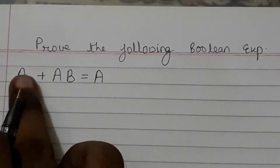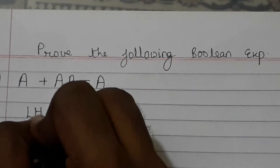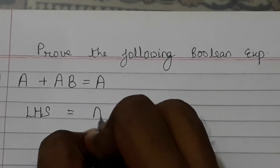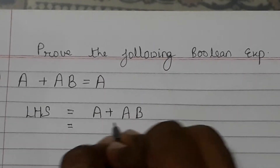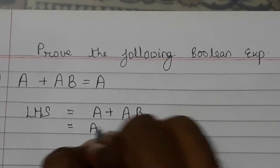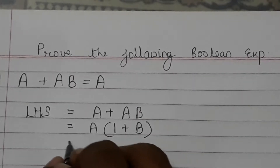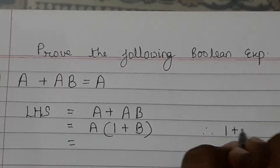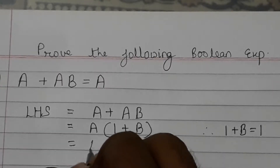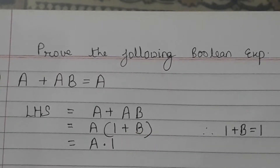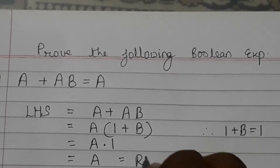We write the left hand side. LHS equals A plus AB. Taking A common: A into (1 plus B). Now 1 plus B equals 1, so we get A into 1, which equals A, equals RHS.